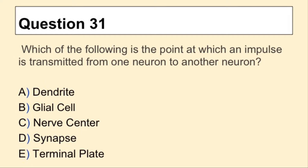Question 31. Which of the following is the point at which an impulse is transmitted from one neuron to another neuron?